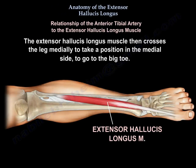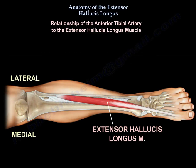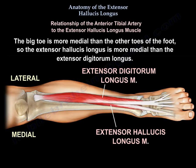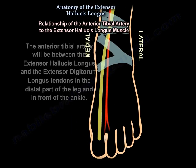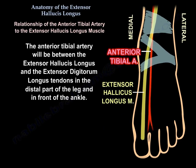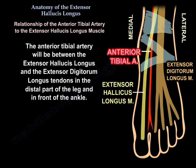The extensor hallucis longus muscle then crosses the leg medially to take position on the medial side so it can reach the big toe, which is more medial than the other toes. Therefore, the extensor hallucis longus is more medial than the extensor digitorum longus. The anterior tibial artery will then lie between the extensor hallucis longus and the extensor digitorum longus in the distal part of the leg and in front of the ankle.